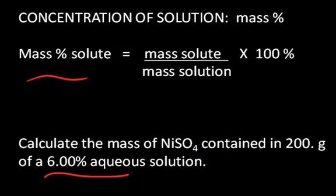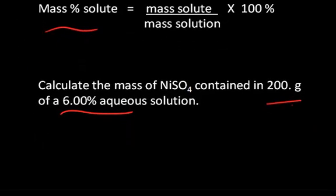So the concentration of this particular nickel sulfate solution is 6 mass percent. And the question is, they want us to calculate the mass of the nickel sulfate in 200 grams of such a solution. So we just need to know what the 6% means.